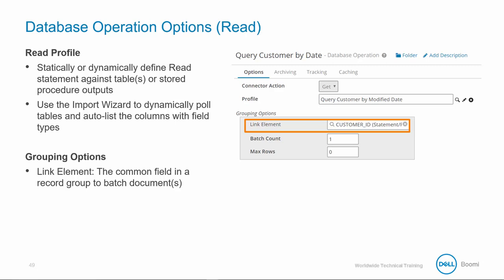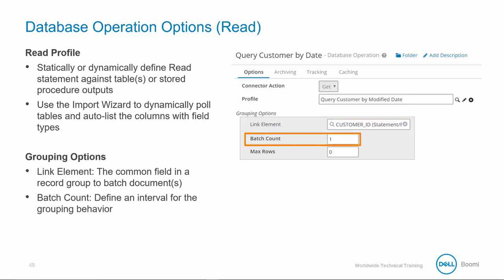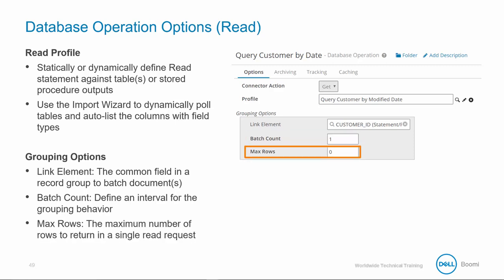It is common to group the records where the primary key is unique per each document. For instance, we can set the link element to customer_ID since it has a unique record identifier returned in our statement. The batch count allows you to define an interval for the grouping behavior. Here we're using one because we want one unique customer ID per document. This allows us to send documents to other validation logic where each step can be analyzed independently. The max row setting allows you to limit the maximum number of rows to return in a single read, which is common in large data migrations with performance concerns.